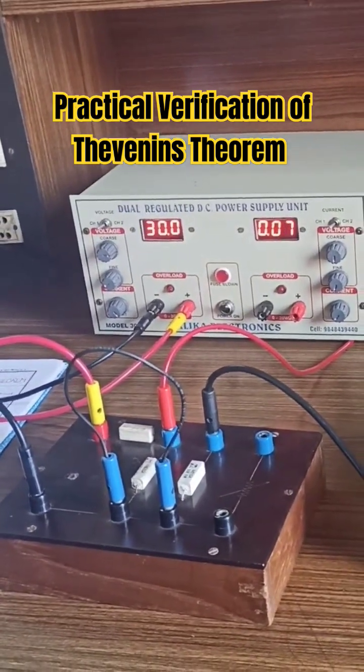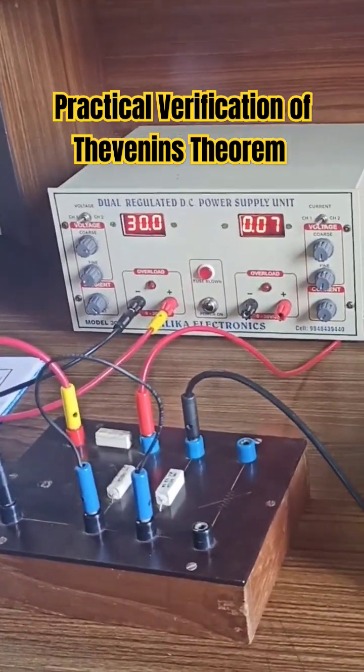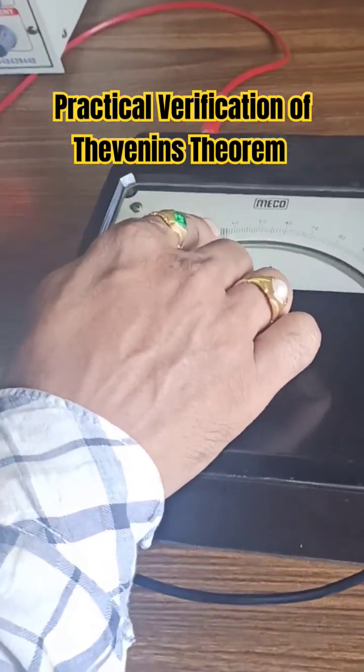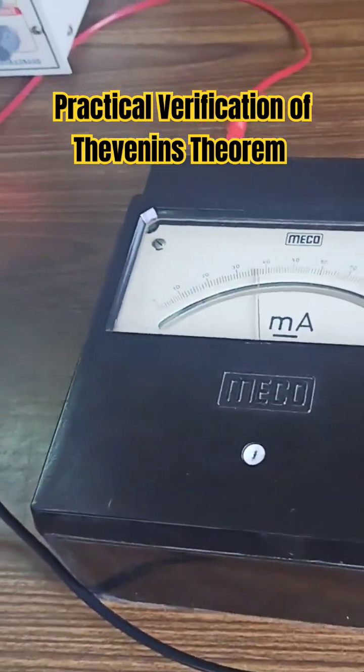The applied voltage is 30 volts at the input port and now you can see here the direct current. 35, 36, 37, 38 milliamperes.